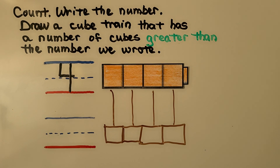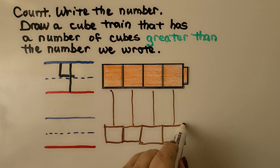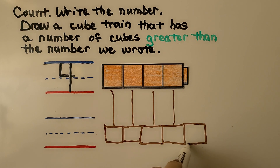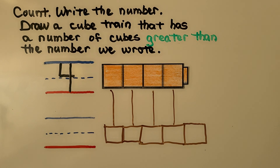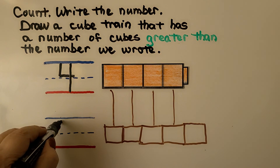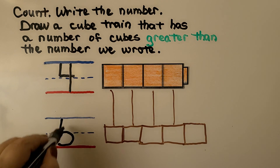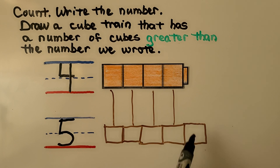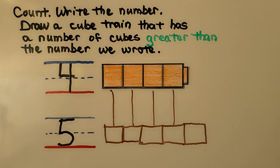To have a number of cubes greater than 4, we need to draw at least one more cube. Now we have 1, 2, 3, 4, 5. That's a number that's greater than 4. 5 is greater than 4. We can see we drew one more cube, so we have a greater number of cubes in our cube train. To show greater than, at least one more cube needs to be on our cube train.